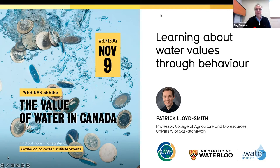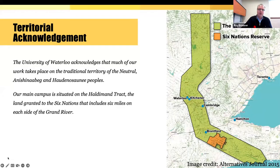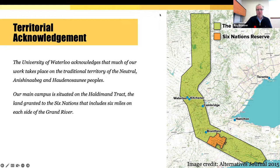I want to start by acknowledging that we're participating today from traditional territories of the first peoples. I participate from land that is part of the traditional territory of the Neutral, Anishinabeg, and Haudenosaunee peoples. As you can see on this map, our campus is situated on the so-called Haldimand Tract, land granted to the Six Nations, including six miles on each side of the Grand River. The University of Waterloo and its institutes like the Water Institute are committed to Canada's truth and reconciliation commission's calls for action. I encourage you all to take a moment to recognize the traditional land where you are.